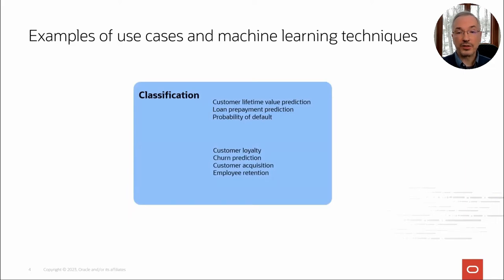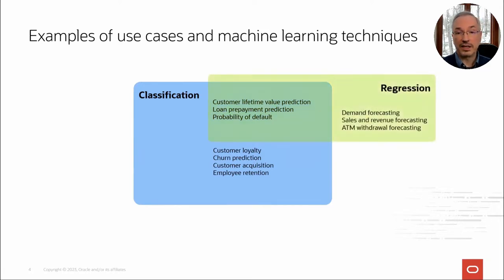Classification use cases include identifying customers with high lifetime value, who are likely to prepay their loans or perhaps default on their loans. Other classification use cases may include predicting if a customer is likely to churn, should be prioritized for a given marketing campaign, or even HR-related functions involving hiring or addressing employee retention. A second technique is regression, which could also be applied to some of these classification use cases, but where an outcome is a numeric value.